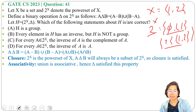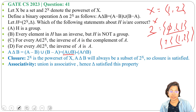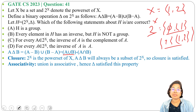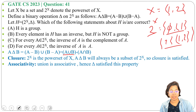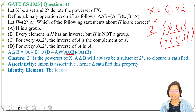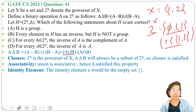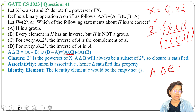Next is associativity. Union is associative and intersection is associative, hence this delta operation is also associative, since A delta B equals A union B minus A intersection B. So associativity is also satisfied.